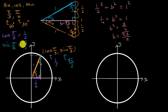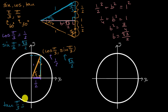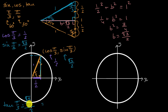The tangent of pi over three is going to be sine over cosine — that's square root of three over two divided by one half. This simplifies to square root of three over two times two, which is just square root of three.